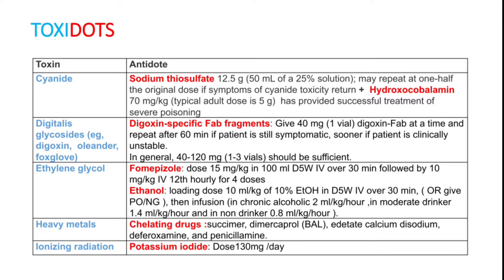For ethylene glycol, you can use fomepizole as an antidote. The dose is 15 mg per kg body weight in 100 ml dextrose saline to be given over 30 minutes. Ethanol can also be used — loading dose 10 ml per kg body weight of 10% ethanol in 5% dextrose over 30 minutes.